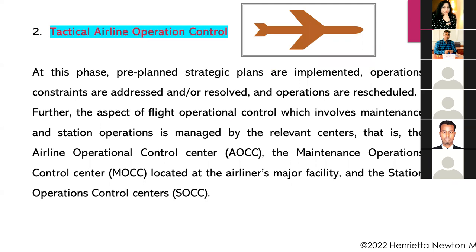In tactical airline operation control, pre-planned strategic plans are implemented, operational constraints are addressed and resolved, and operations are rescheduled as needed. For example, if there is any impediment in executing a plan — such as an issue with a flight's schedule, fueling, maintenance, or other factors — those constraints are addressed and resolved, and the operations are rescheduled.